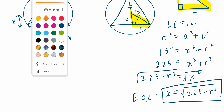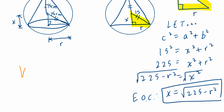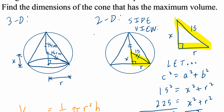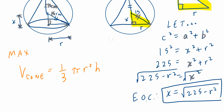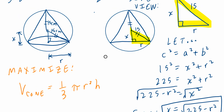Our goal is to find the volume of the cone. The volume of the cone is going to be one-third times pi r squared h, and from the question you're looking for the maximum volume. Going back to the diagram, this is going to be the entire height h. If you think about this, height is 15 plus x. So height h equals 15 plus x.